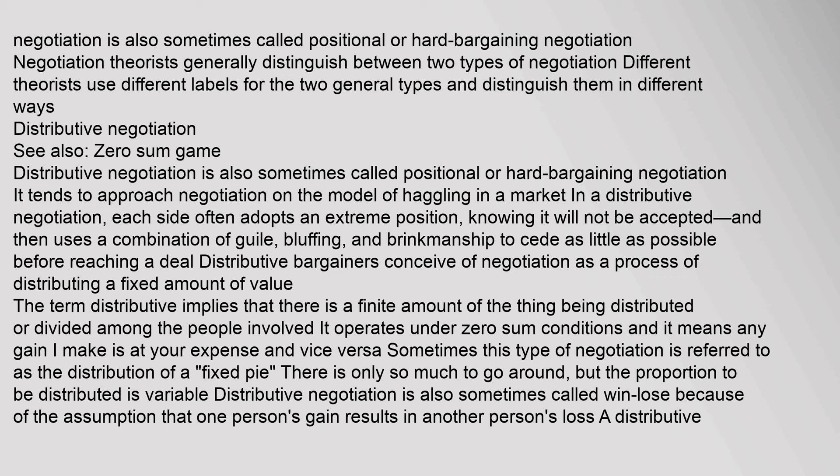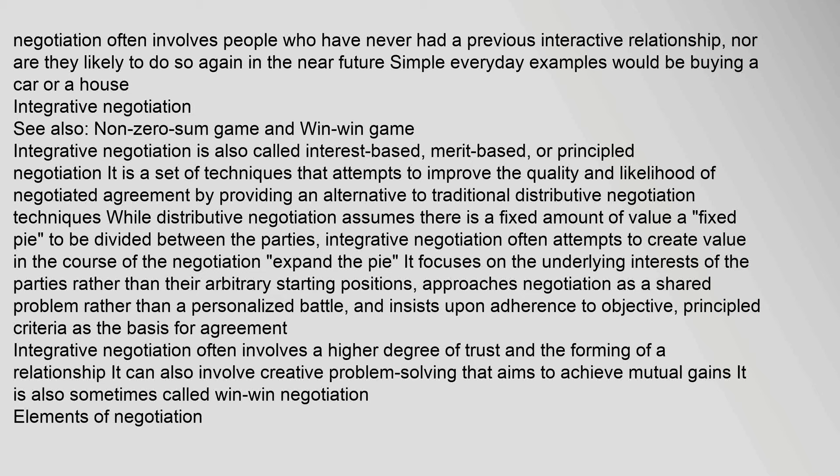Distributive negotiation is also sometimes called win-lose because of the assumption that one person's gain results in another person's loss. A distributive negotiation often involves people who have never had a previous interactive relationship, nor are they likely to do so again in the near future. Simple everyday examples would be buying a car or a house.